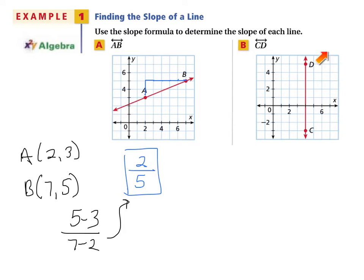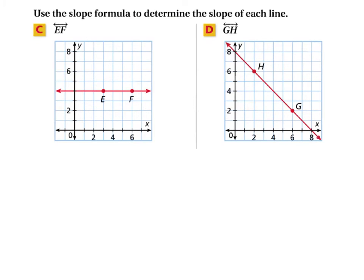B should be a no-brainer right now. Vertical lines. Vertical lines always have a slope of what? Undefined. In this problem, C, we know horizontal lines always have a slope of what? 0.